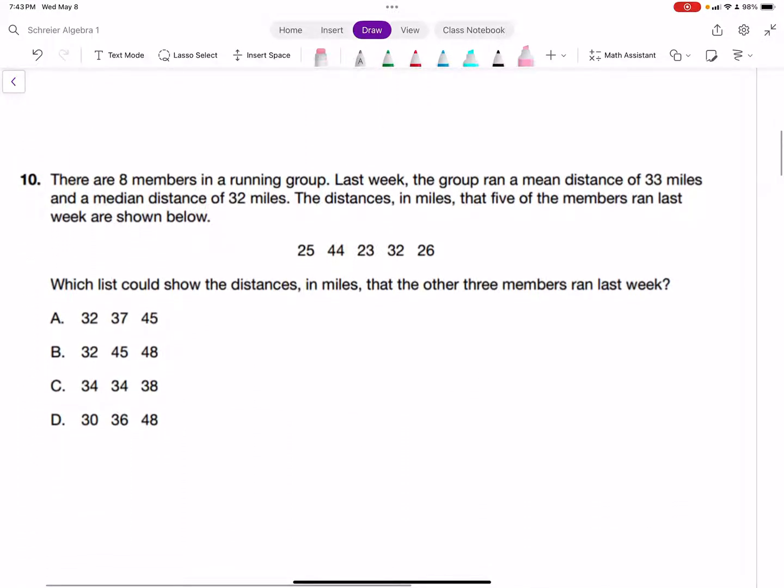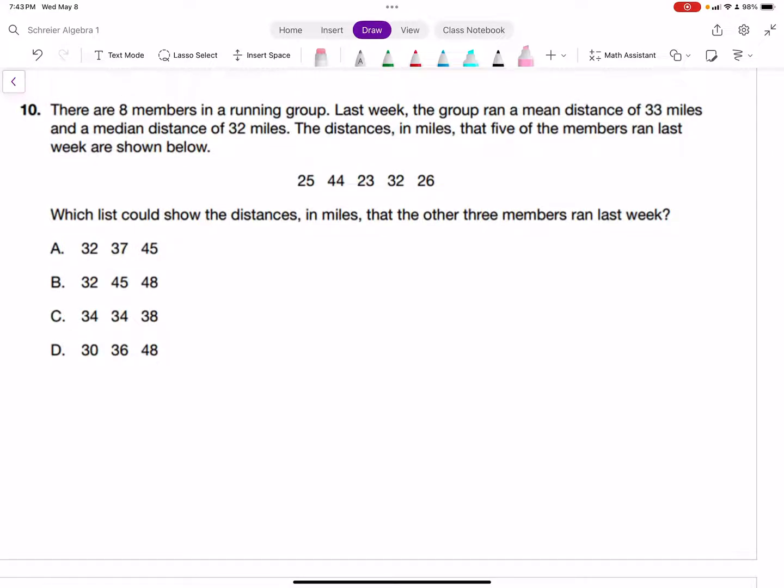Question 10. We have 8 members in a running group. Last week the group ran a mean distance of 33 miles and a median of 32 miles. The distances that five members ran are shown. Which list could show the distances the other three members ran? To find the mean, we add all data values and divide by how many there are, which is eight.